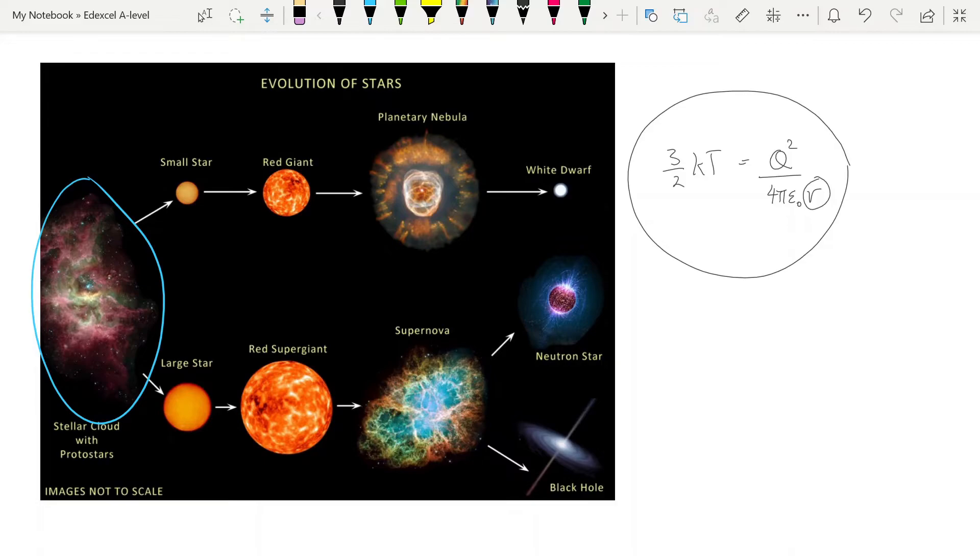So when the stellar cloud collapses, what you get is gravitational potential energy being converted into kinetic energy. And of course we know, in this expression up here, that the average kinetic energy of the particle, the gas, is proportional to its absolute temperature. So essentially, as kinetic energy increases, the temperature increases. Now once fusion begins, that's when it joins the HR diagram and it lands on the main sequence.